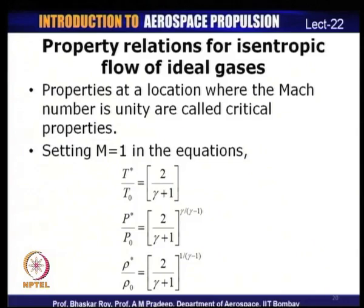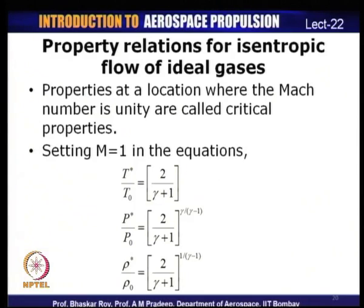Setting M = 1: T*/T₀ = 2/(γ+1). Similarly, P*/P₀ = [2/(γ+1)]^(γ/(γ−1)). These equations relate critical properties to corresponding stagnation properties, and depend only on the ratio of specific heats γ.